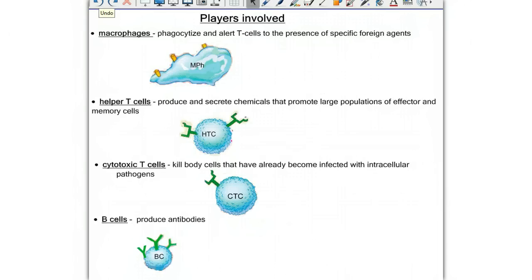These are the players involved in the specific immune responses. We have macrophages, large white blood cells that engulf foreign particles and alert T-cells to the presence of these specific foreign agents. Then we have helper T-cells that are going to produce and secrete chemicals that signal the promotion of large populations of effector and memory cells.